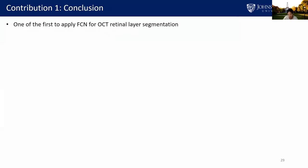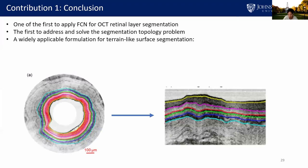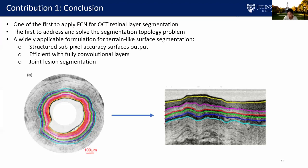In conclusion, we are among the first works to apply a fully convolutional network to OCT layer segmentation, and are the first to address and guarantee the layer segmentation topology. Our proposed regression formulation can be applied to other terrain-like surface segmentation problems — for example, endoscopy images can be converted to our formulation. Our network outputs structured surfaces efficiently with fully convolutional layers.